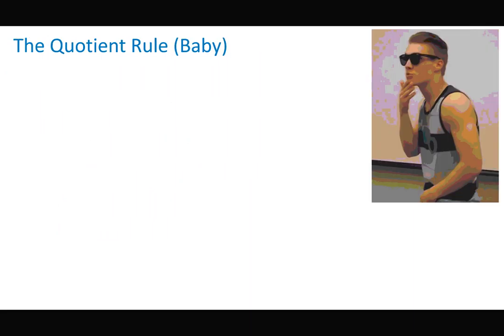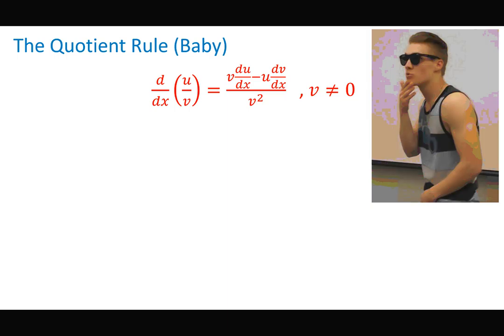The next rule is the quotient rule. Order is important here because there's subtraction in the numerator — 5 minus 2 is not the same as 2 minus 5, so it has to be in the correct order. For u divided by v, the derivative is v times du/dx minus u times dv/dx, all divided by v squared. In prime notation: v times u prime minus u times v prime, all over v squared.